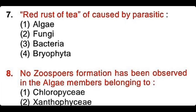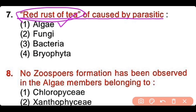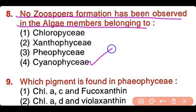Question number 7: The red rust of tea is caused by parasitic algae, fungus, bacteria, or bryophyte? The correct answer is option 1, parasitic algae. Question number 8: No zoospore formation has been observed in the algae members belonging to chlorophyceae, xanthophyceae, phaeophyceae, or cyanophyceae? The correct answer is option 4. Cyanophyceae have no zoospores.